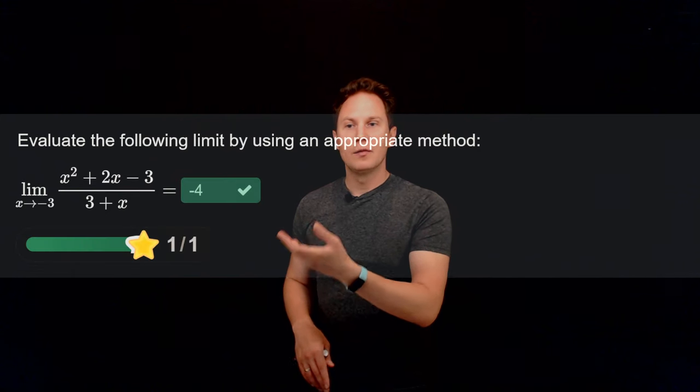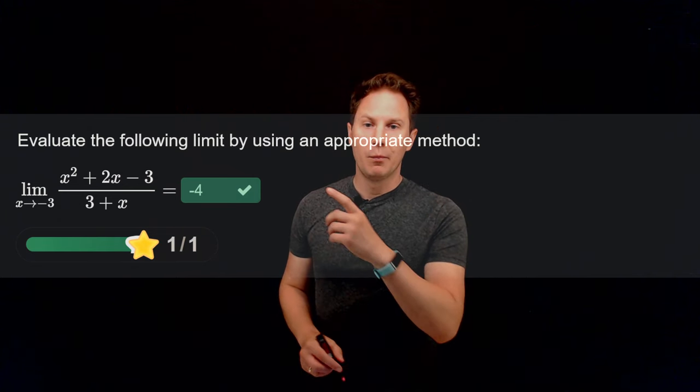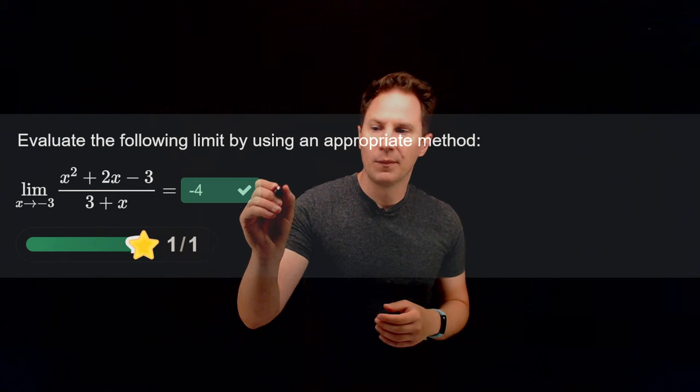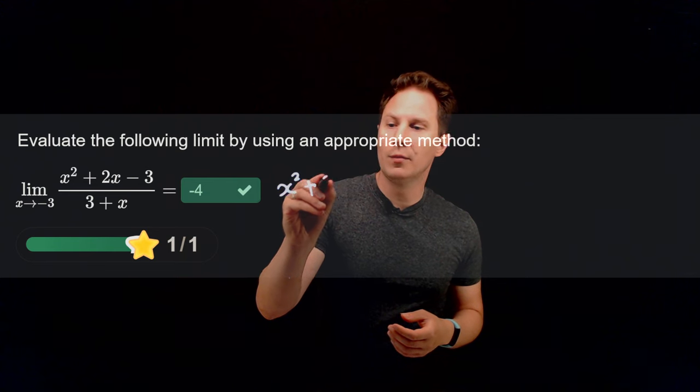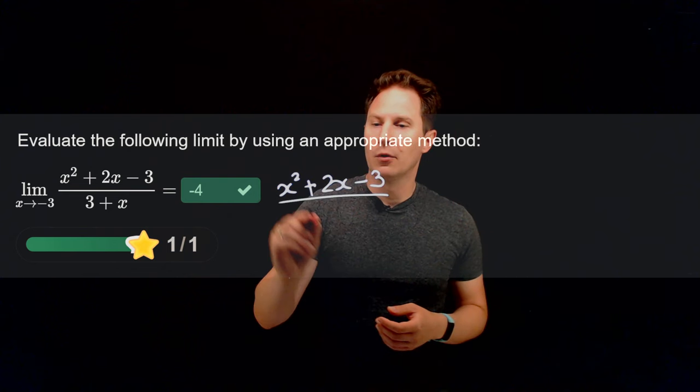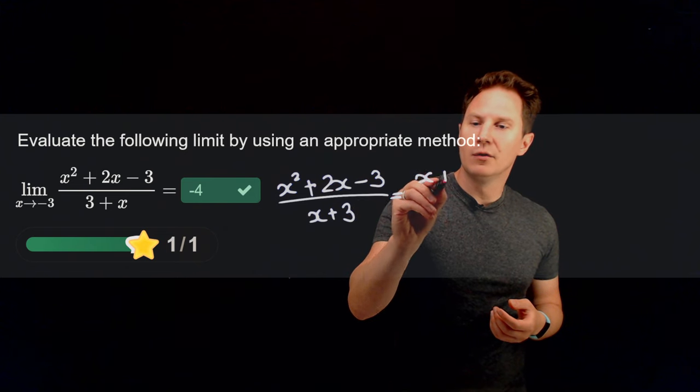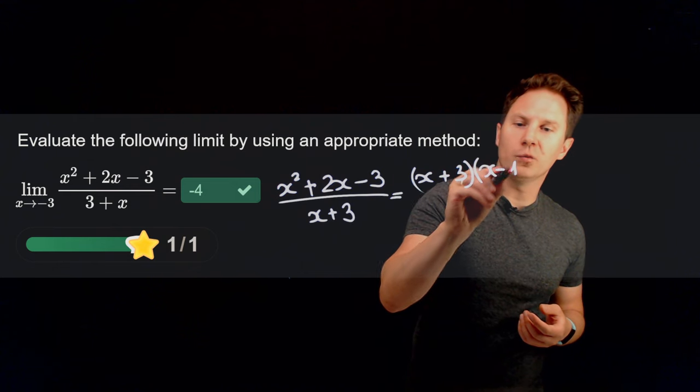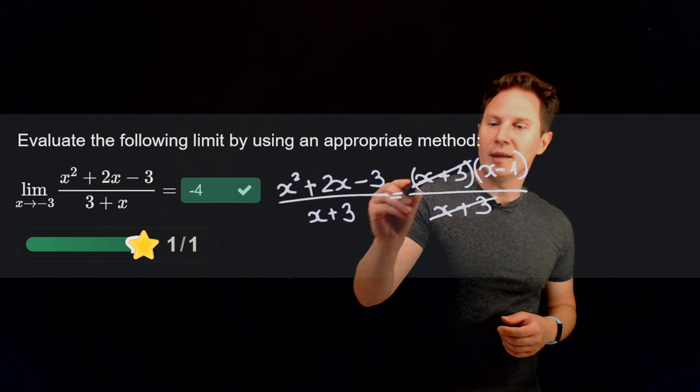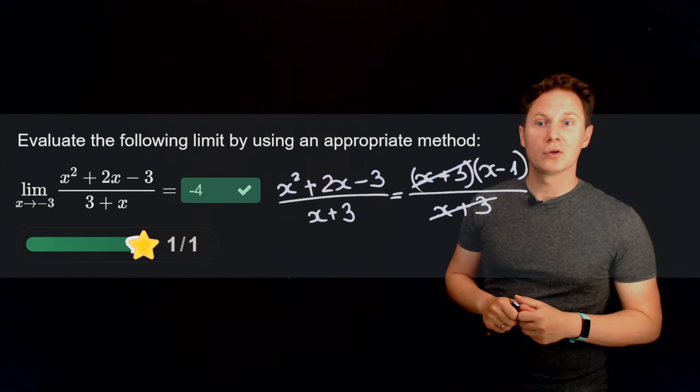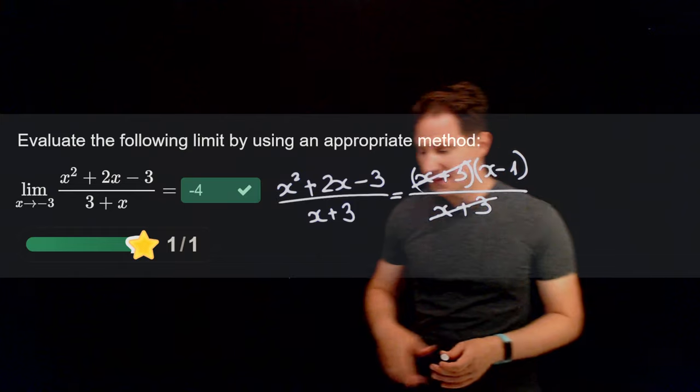I hope you paused it and realized that direct substitution won't work in this case because plugging in x equals negative 3 gives you 0 over 0, but that means that there are these factors of x plus 3, so of course the denominator itself is x plus 3, so it's the numerator that we need to factor, collect the factors of x plus 3 there. If you factorize the numerator, you get x plus 3 times x minus 1, you can check it by expanding the parenthesis. And then we can cancel all of these problematic factors, leaving us with x minus 1, where direct substitution works. Plugging in x equals negative 3 gives you negative 3 minus 1, that is negative 4. Let's look at the next question.